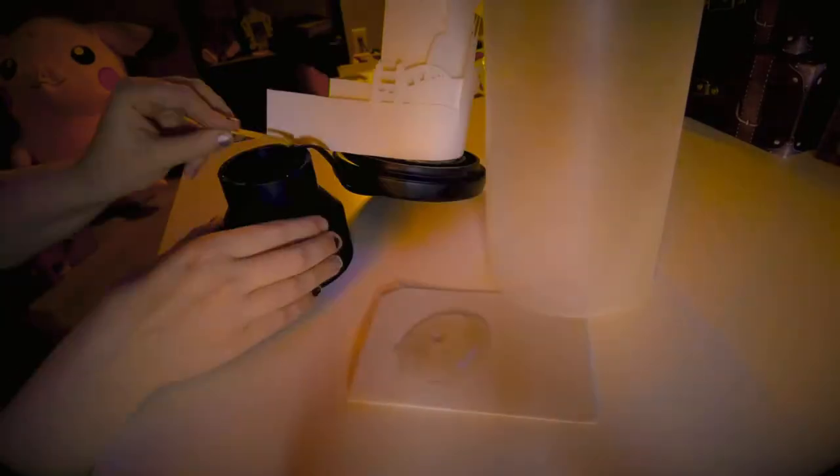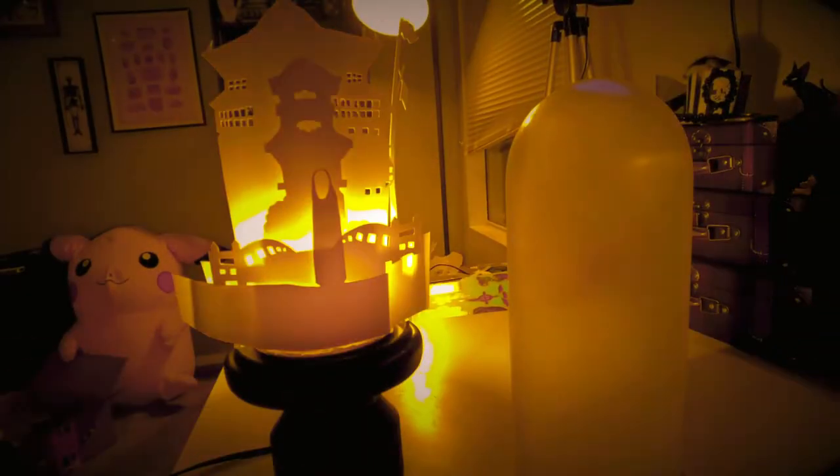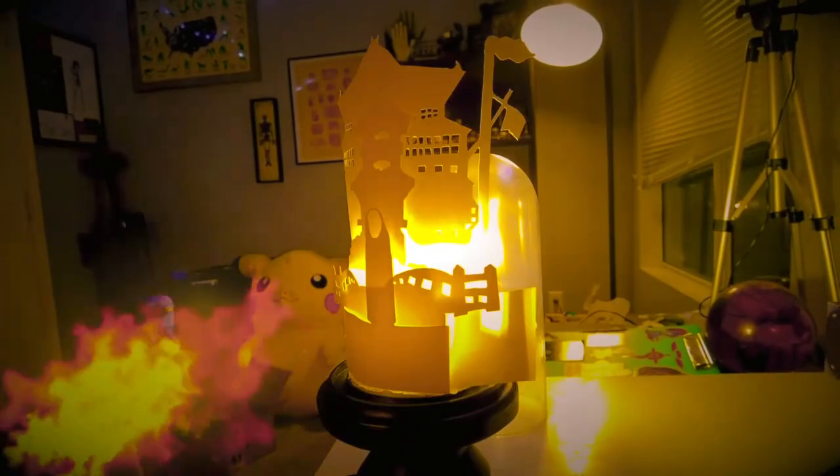This is me epoxying the PVC onto the base. The dome I just used hot glue in case you need to get the light bulb later. Used a fire effect to try to cover up some of the mess in my room and done.